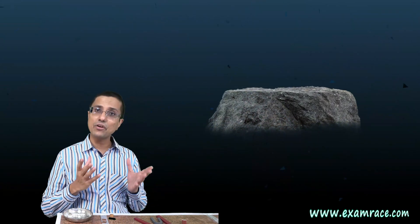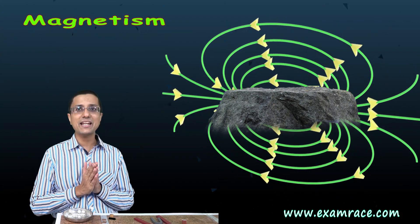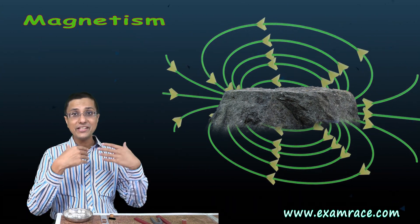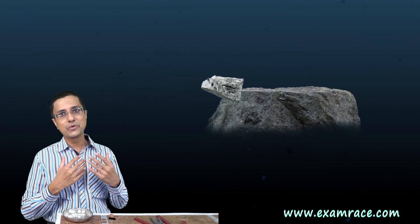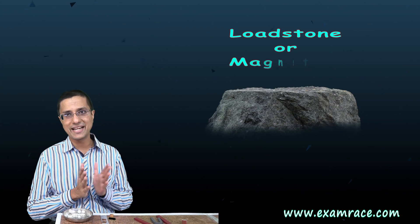Of course, now we understand that the rock had a special property which is known as magnetism, and these magnets are able to attract certain other magnetic materials towards them. This rock is known as lodestone or magnetite.